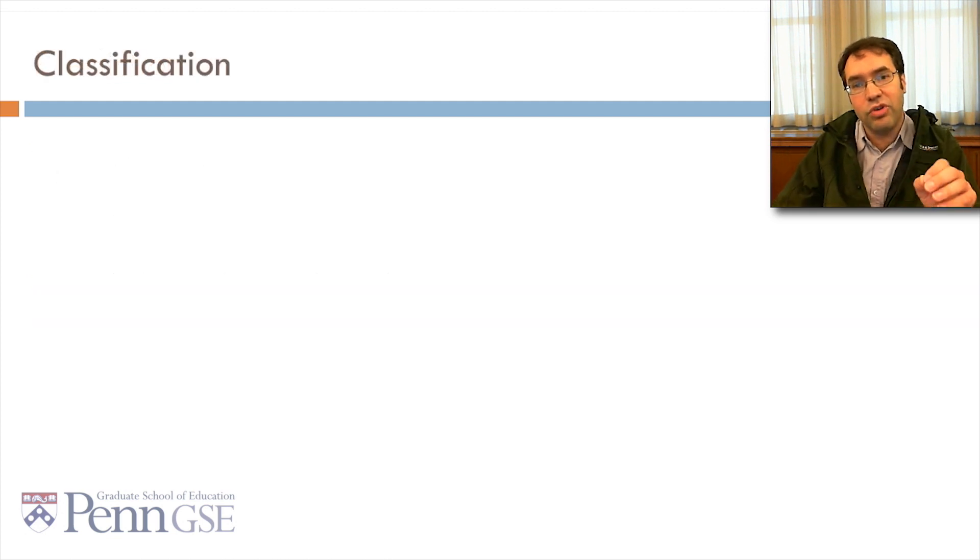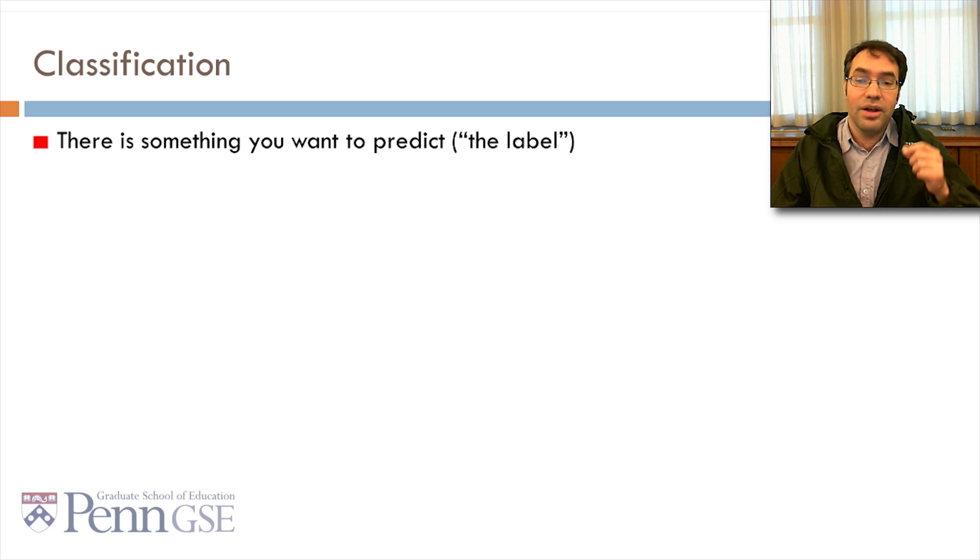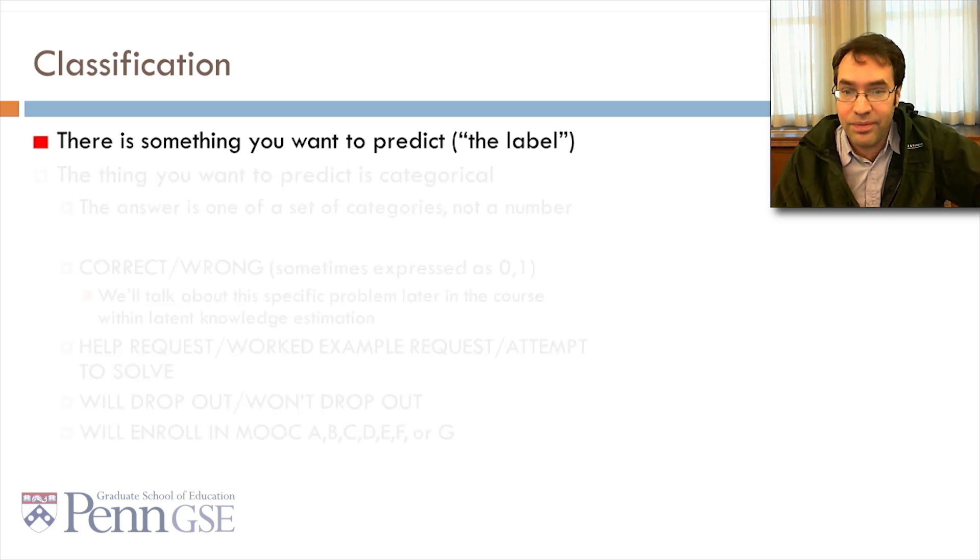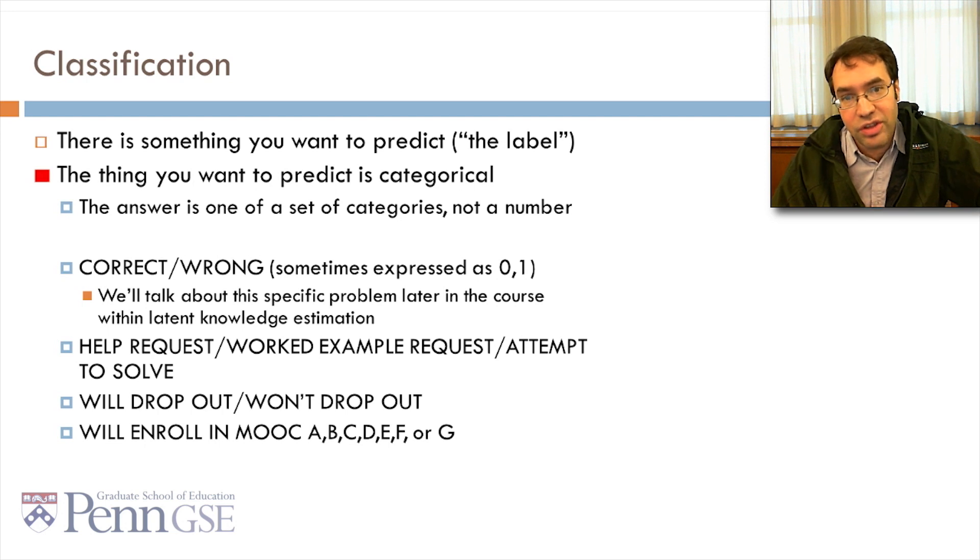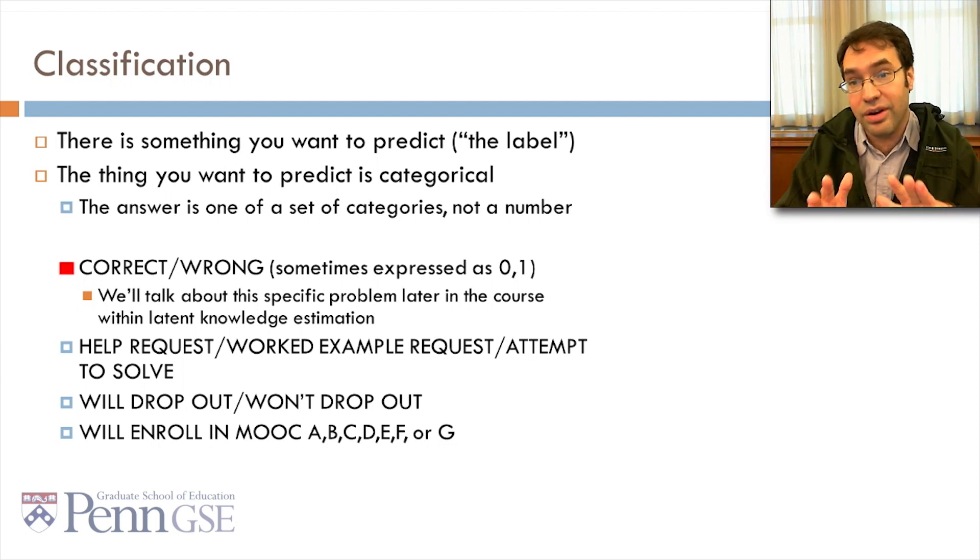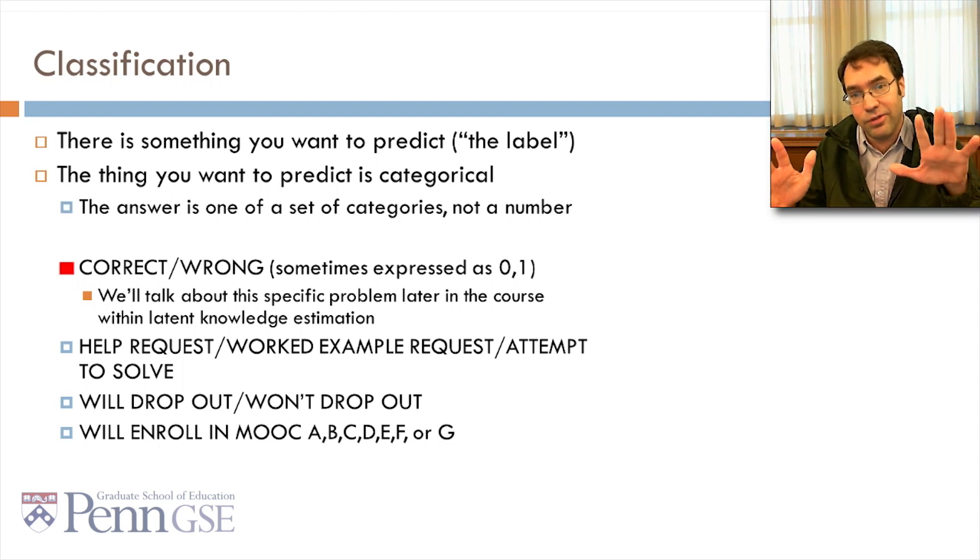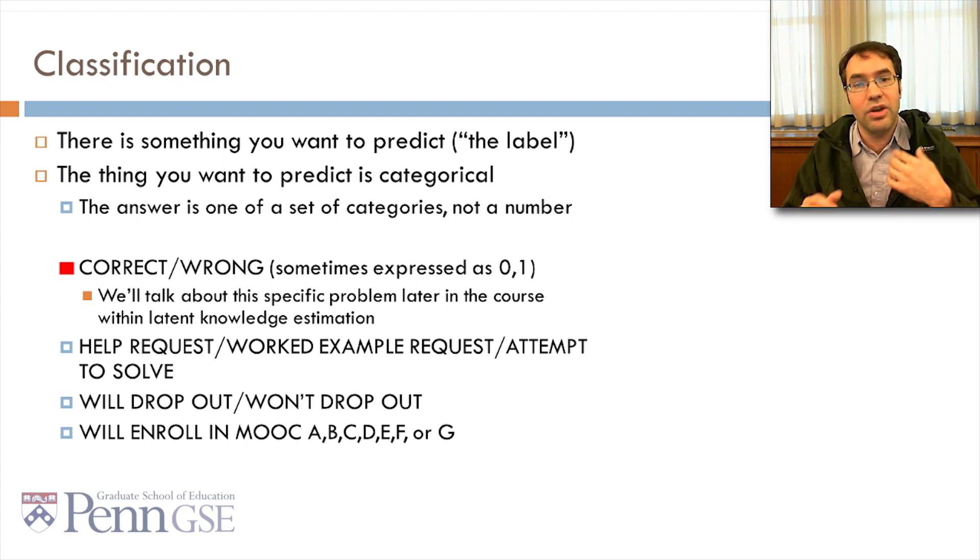In this class, we're going to talk about classification, which is a type of prediction model. Like any type of prediction, there's something you want to predict, the label. And in classification, the thing you want to predict is categorical. The answer is one of a set of categories, not a number. It could actually be binary, 0, 1. That still gets treated as categorical data for this purpose.